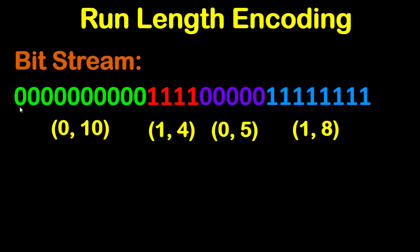As you see, in this case we have zeros, so this will be the first group. Then ones — this is the second group. Again zeros, so this is the third group. Again ones, so this is the fourth group.